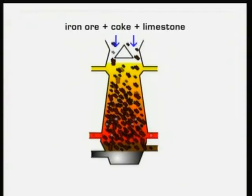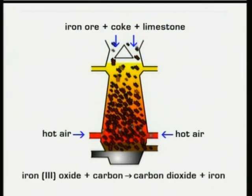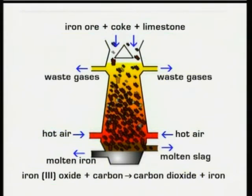Iron oxide ore, coke and limestone are fed in through the top of the furnace. The coke is ignited and hot air is blasted in from the bottom. In principle, the carbon in the coke reduces the iron oxide to give carbon dioxide plus iron, which runs to the bottom of the furnace. In practice, the chemistry is a bit more complicated than that. The limestone is added to remove the impurities as slag.